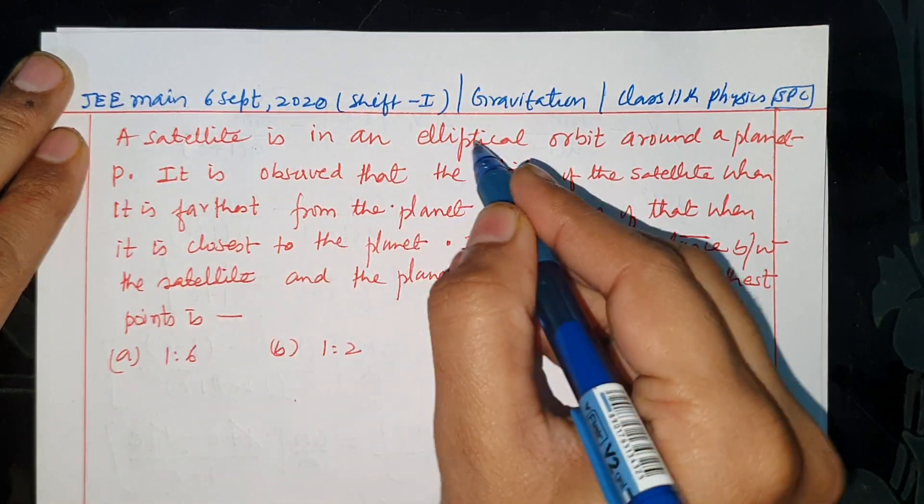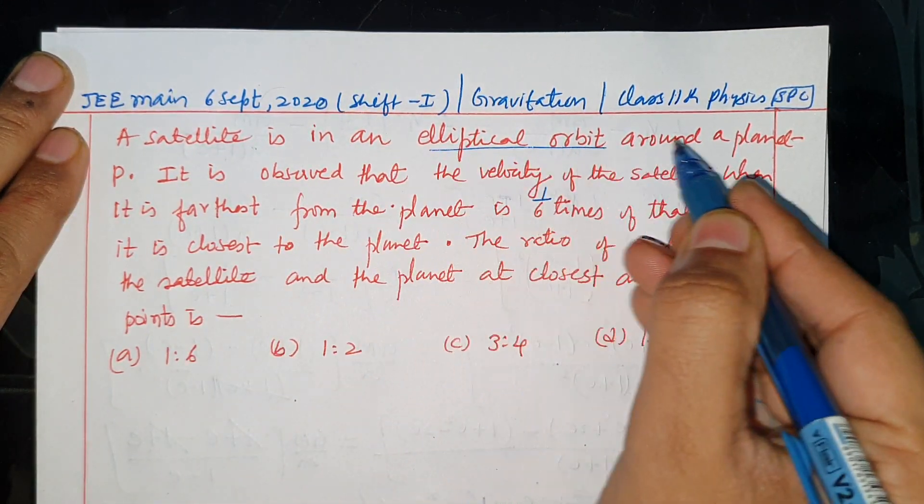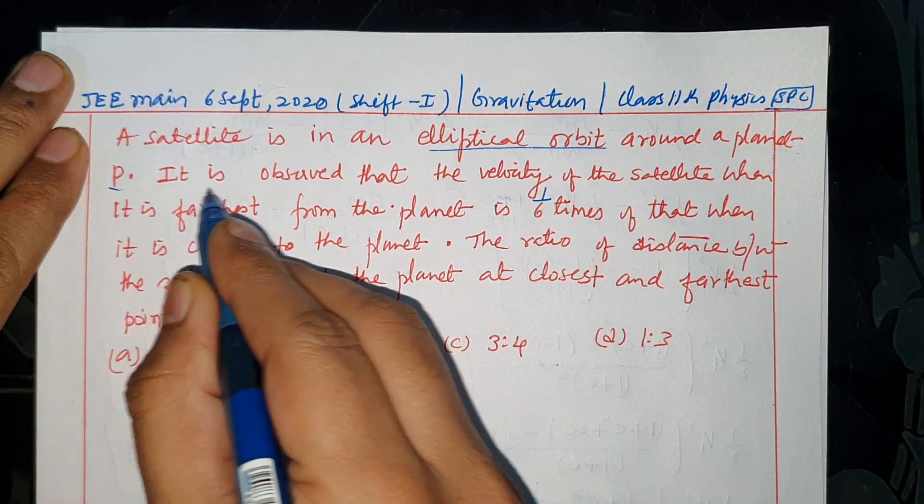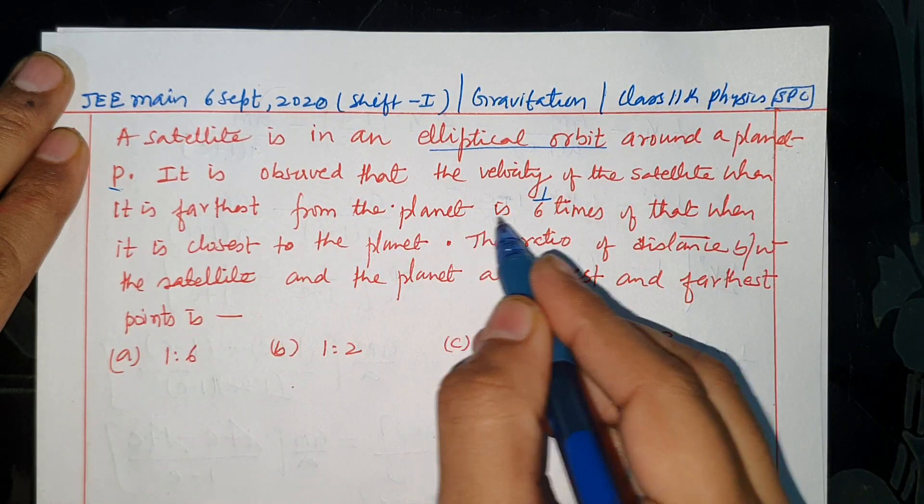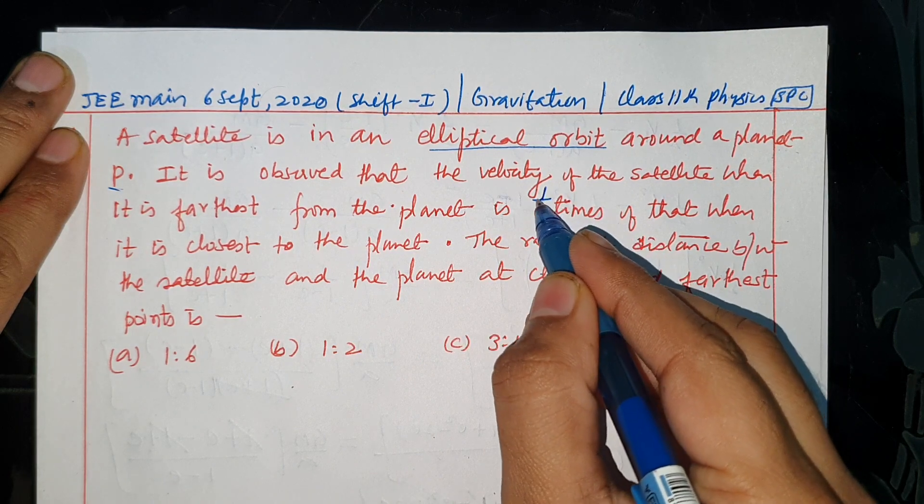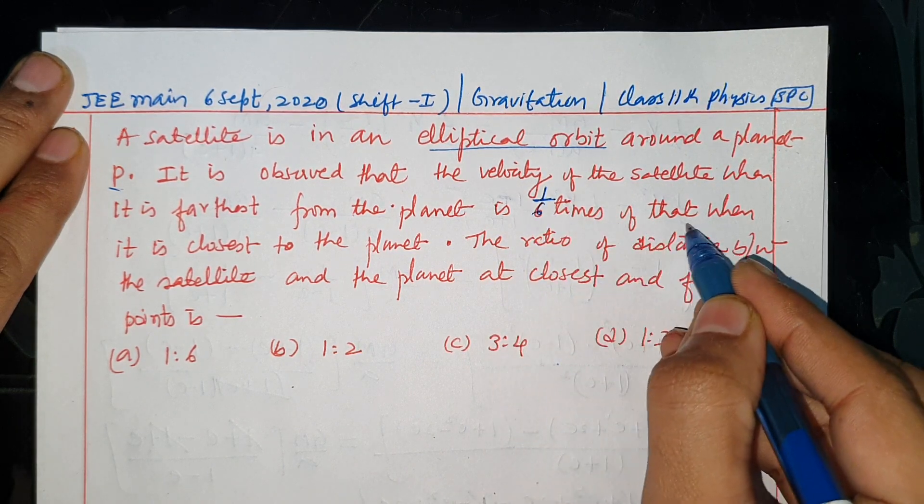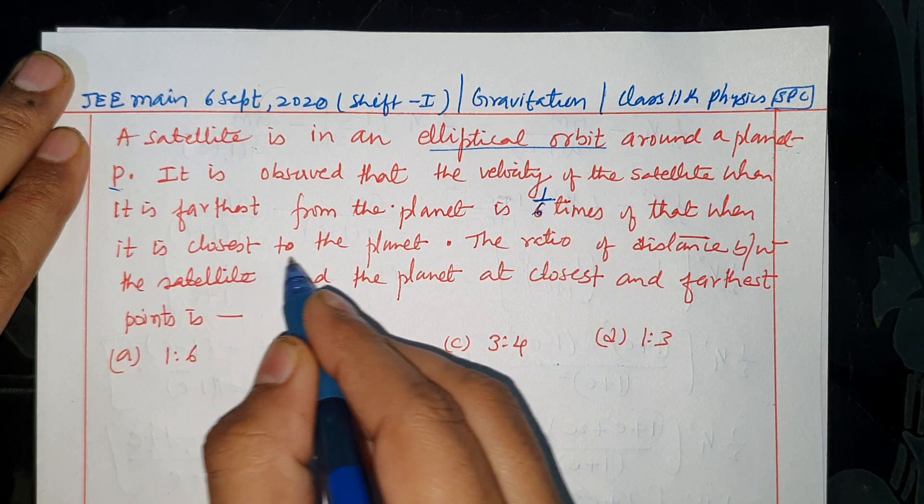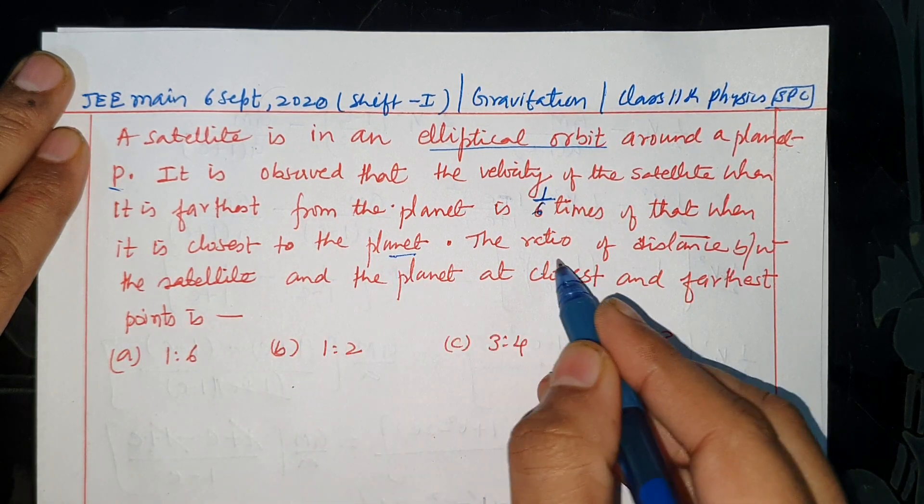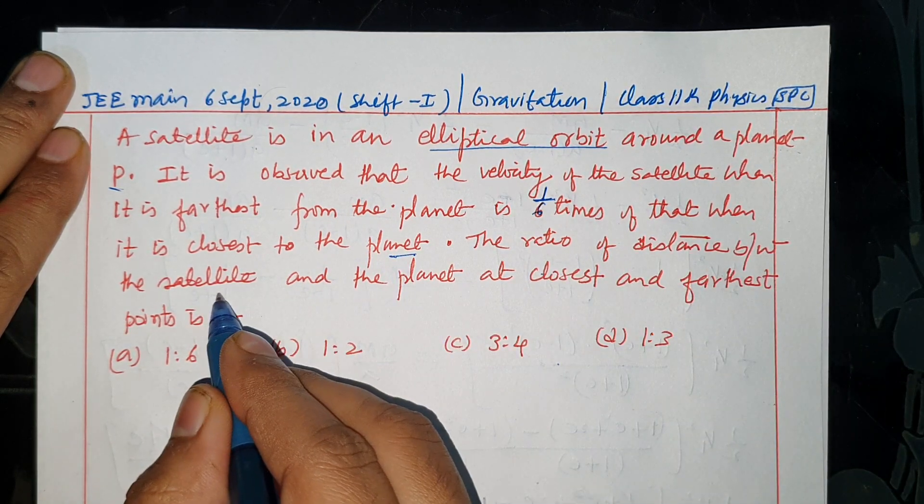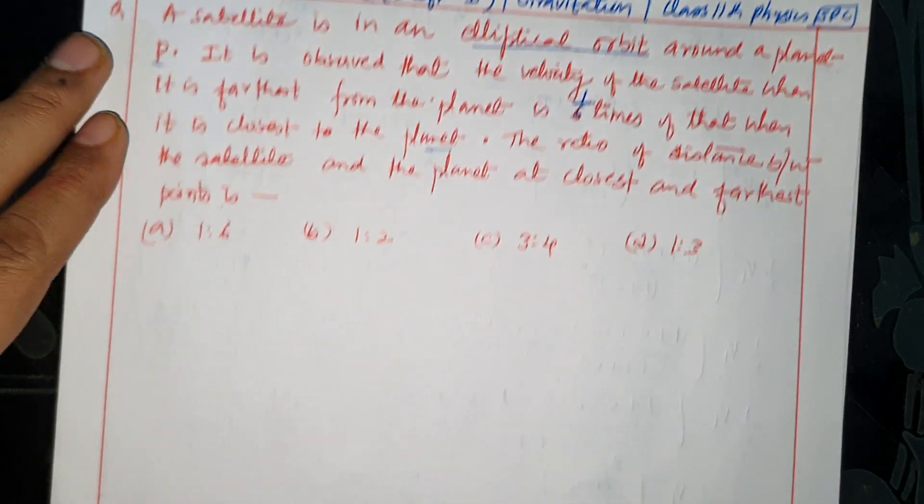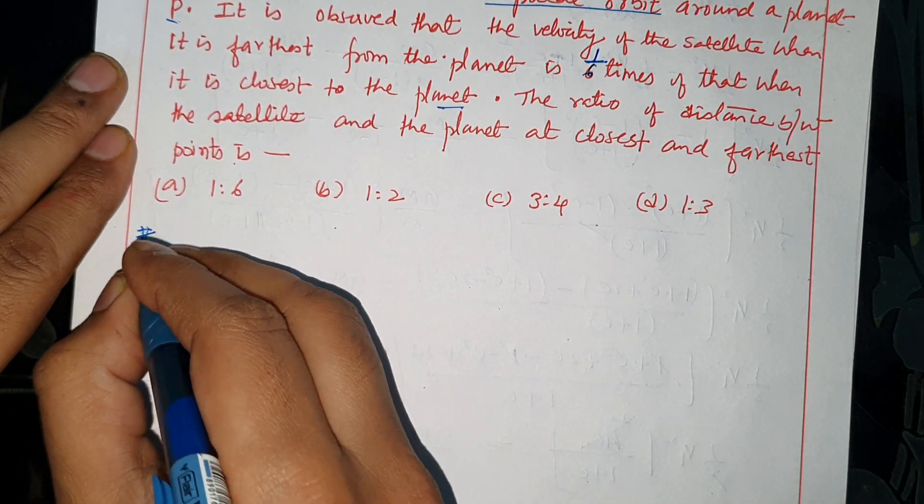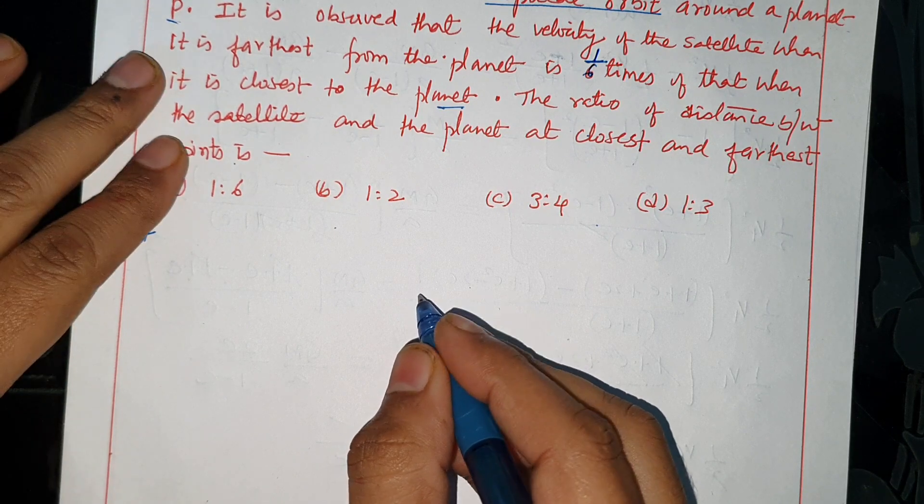A satellite is in elliptical orbit around a planet P. It is observed that the velocity of the satellite when it is furthest from the planet is 1 by 6 times of that when it is closest to the planet. The ratio of distance between the satellite and planet at closest and furthest point is given. This is the diagram and the data is given to us.